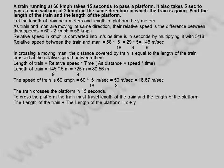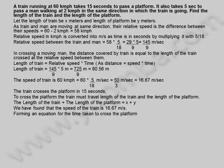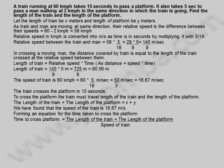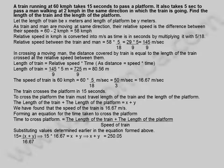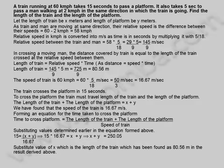The length of the train plus the length of the platform equals x plus y. The speed of the train is 16.67 meters per second. Forming an equation: time to cross platform equals the length of the train plus the length of the platform divided by speed of train. Substituting values: 15 equals x plus y divided by 16.67, implies x plus y equals 250.05. Substituting x equals 80.56 meters: 80.56 plus y equals 250.05 meters.